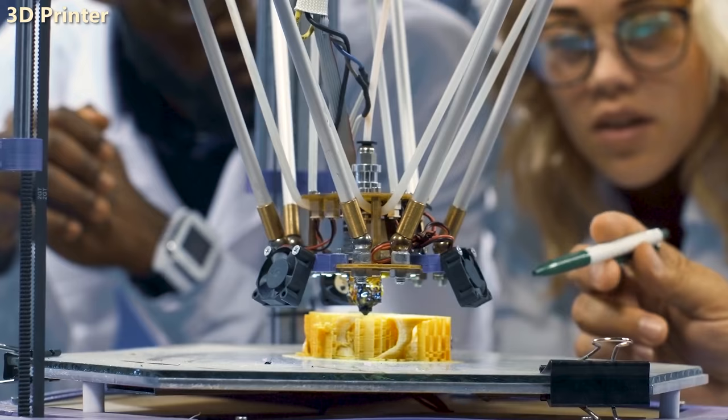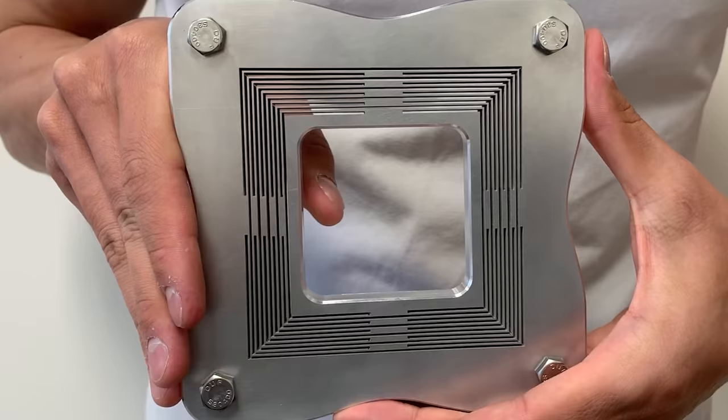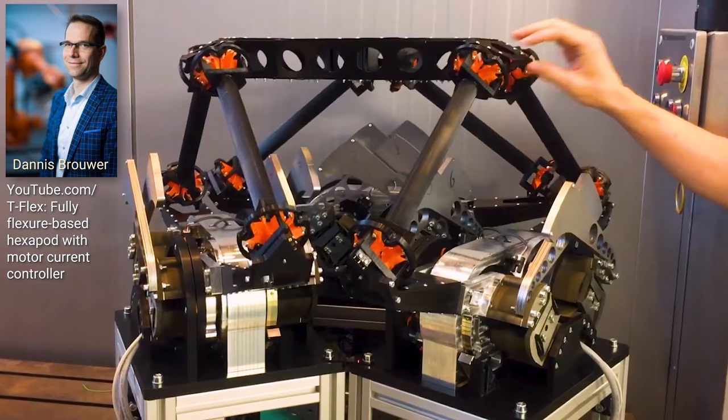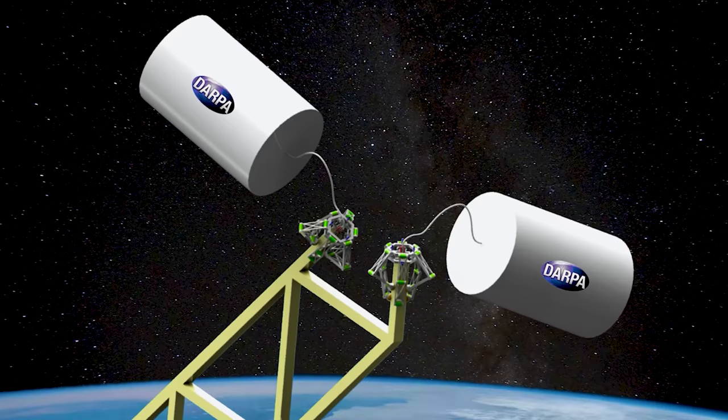If such applications also require high-precision motions with ranges approximately less than 10% of the mechanism's overall size, flexure bearings provide the most promising low-cost solution for guiding such motions while preventing backlash, hysteresis, and wear. This flexure-based six-axis positioner masterpiece was created by Professor Dennis Brower's group at the University of Twente.